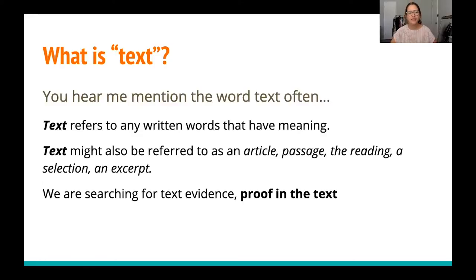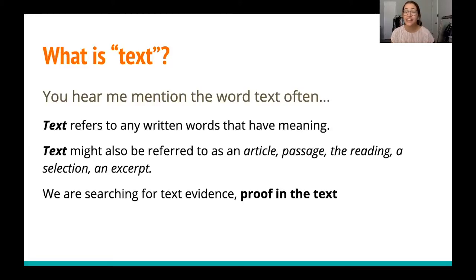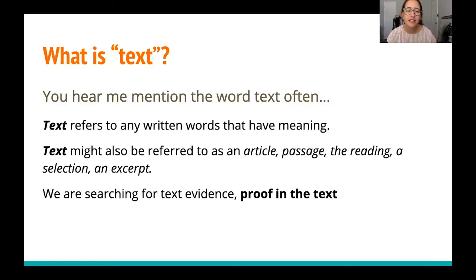So what is a text? A text refers to any written words that have meaning. When it has meaning, it's because we put those words together into sentences and paragraphs because we want to convey meaning. The word text can also be referred to as an article, a passage, the reading, a selection, or an excerpt. Those are all different words you can assume mean the same thing. You might see article at school, or passage on a test — they all mean just any written words that have meaning.